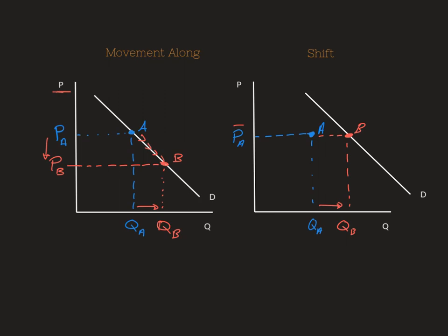So again, the movement along, we saw the change in the price impact the quantity demanded. Whereas a shift, we saw this demand curve move. It's a brand new demand curve, which saw the quantity demanded increase at the same price level.